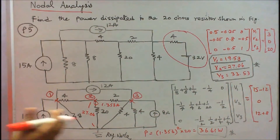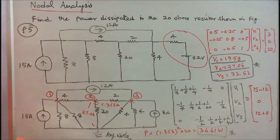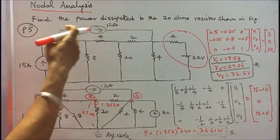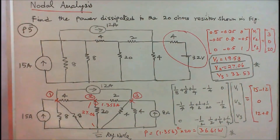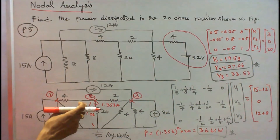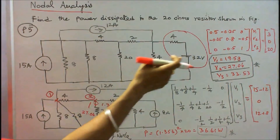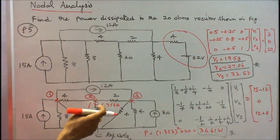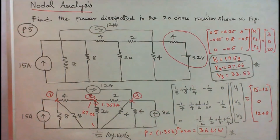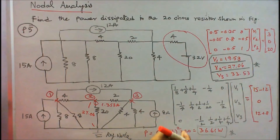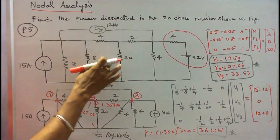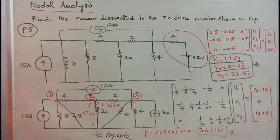Knowing the node voltages, the current through the 20 ohm resistor is V2 divided by R: 27.06 divided by 20 equals 1.353 amps. Power dissipated equals I squared times R: 1.353 squared times 20 equals 36.61 watts. Power dissipated in the 20 ohm resistor is 36.61 watts.